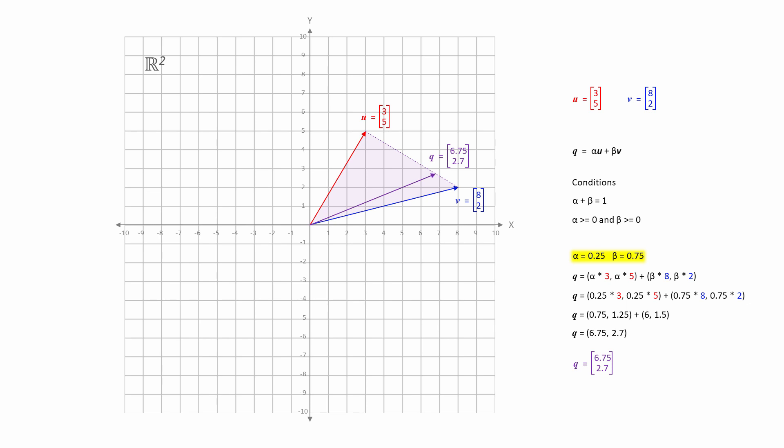Notice that the line segment connecting u and v has been split in the same proportions as alpha and beta, namely 0.25 and 0.75.